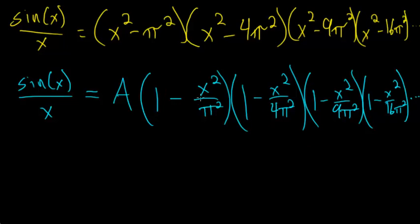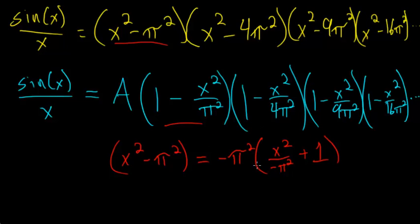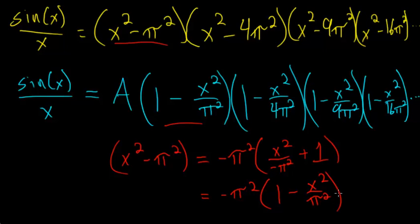To verify this, take the term x² − π². If we factor out −π², we get −π² · (x²/(−π²) + 1), which equals −π² · (1 − x²/π²). So the transformation is valid, and this general idea has been applied to every term. The constant A out front accounts for everything factored out from these polynomials.